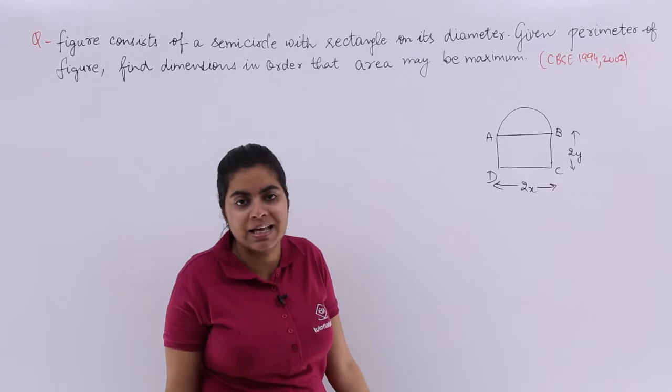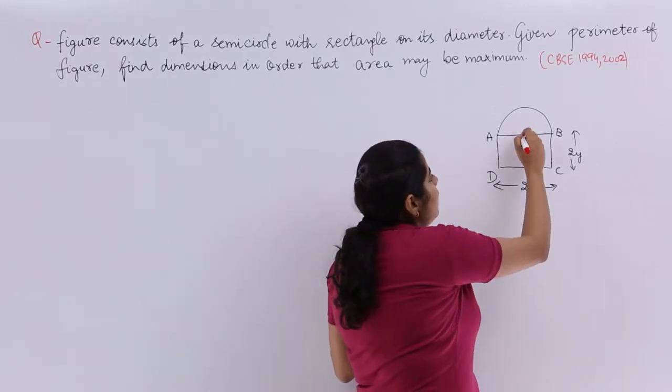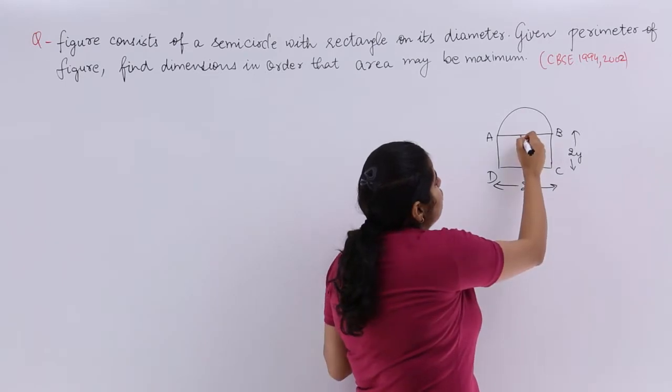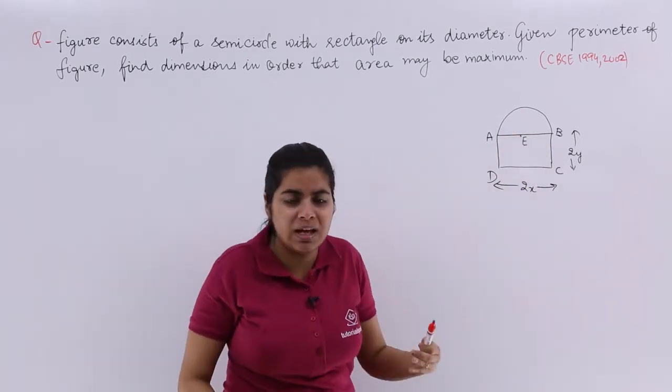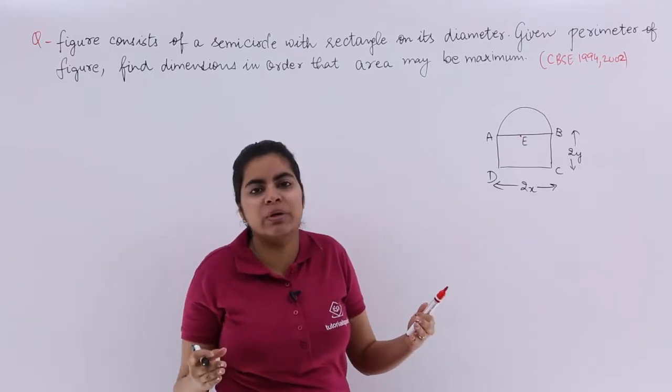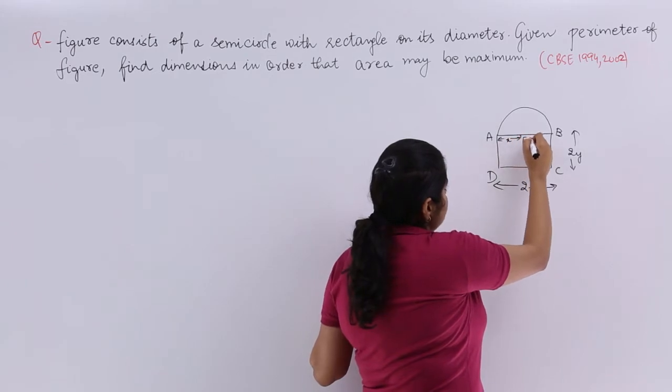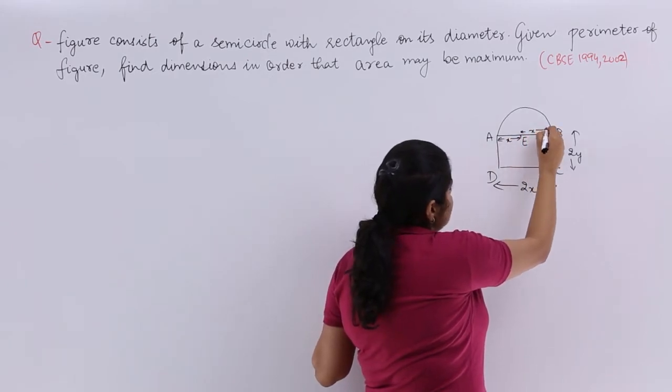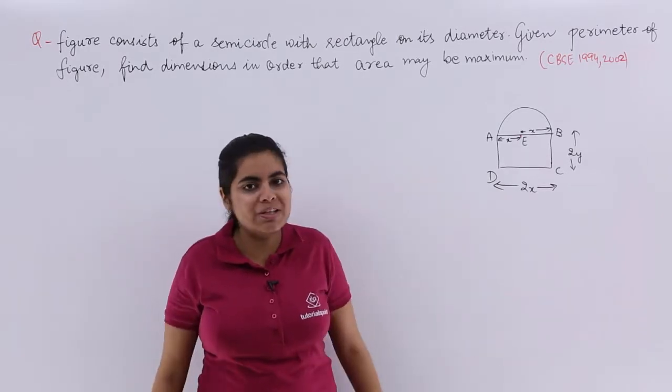Why I am not taking x? Because if I need to consider the radius only, that means if I need to consider AE only, then it will be x by 2 and upon will give me my question very tedious. So it is till here x, again till here x. That is very much easy now to compute. And now let us see what the question is.